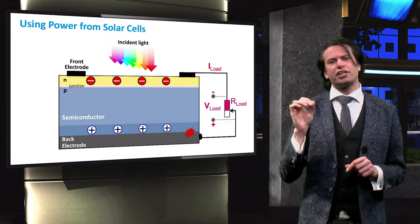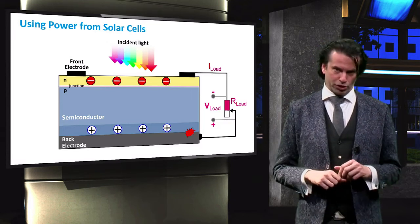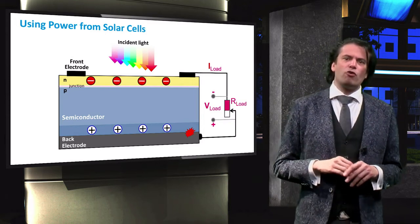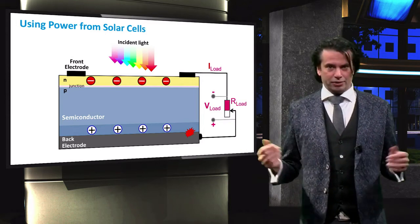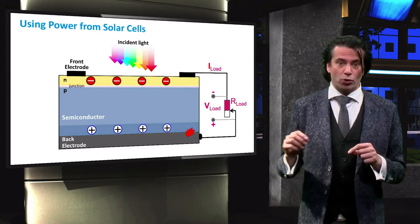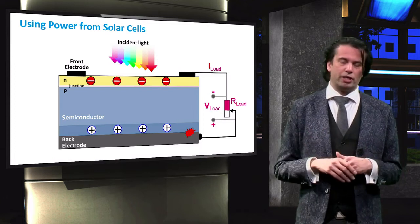This is how the charge carriers are extracted from the solar cells. The chemical energy of the electron hole pairs is now converted to electric energy. After the electrons have passed through the circuit, they recombine with holes at the metal absorber interface.